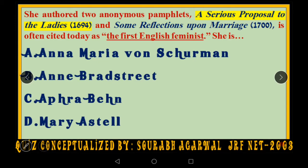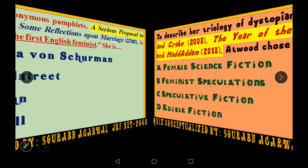Next question: she authored two anonymous pamphlets — 'A Serious Proposal to the Ladies' in 1694 and 'Some Reflections Upon Marriage' in 1700, and she is now considered the first English feminist. This is a factual question showing that there were intellectual women even at the end of the 17th century trying to voice concerns related to women. The options are Anna Maria Avance, Roman, Mary Breadstreet, or Mary Astell. The answer is Mary Astell.